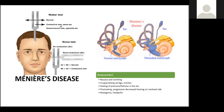Let's look at Meniere's disease, also called endolymphatic hydrops. Signs that a patient has Meniere's disease include dizziness or vertigo — that feeling that you or your environment is turning — hearing loss, ringing in the ear (tinnitus), and a feeling of fullness in the ear. Those are the hallmark features of Meniere's disease.